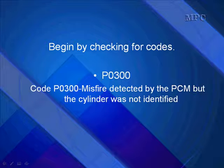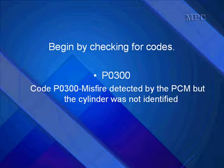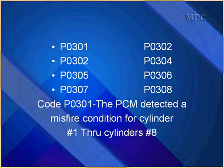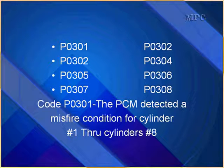When working with scan data for misfires, the first thing you're going to do is check for diagnostic trouble codes. In this section, we're going to go a little heavier into fuel control because bad fuel control can cause misfires, and then you have all the other ignition menus to go to. If you have a P0300, it just tells you that the misfire was detected by the PCM, but the cylinder could not be identified. P0301 through 308 tells us which cylinder — a P0305, for example, tells us that it's cylinder number 5 that has the misfires.